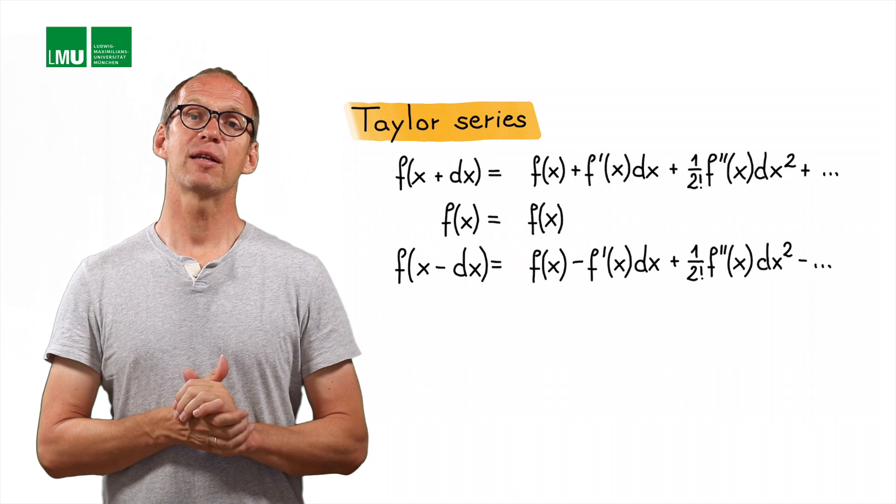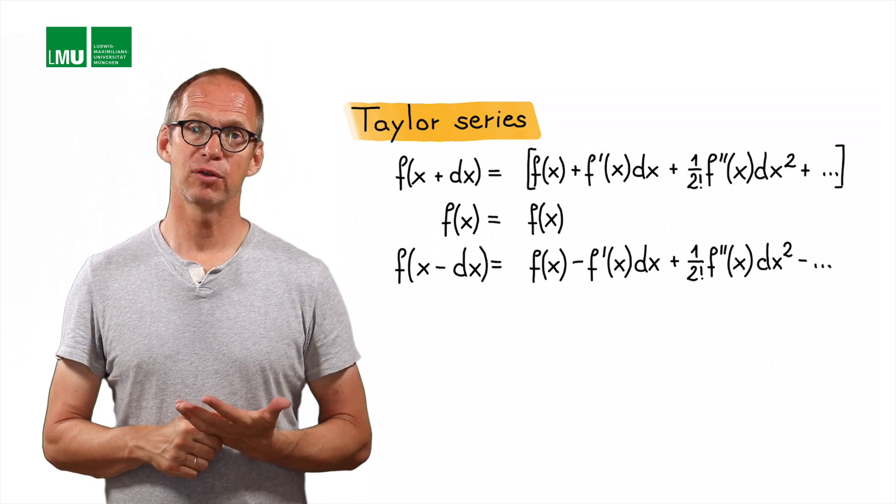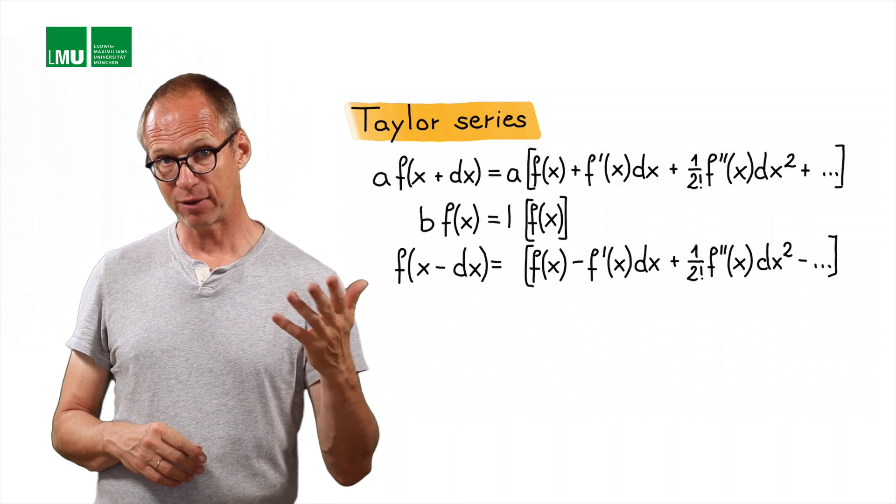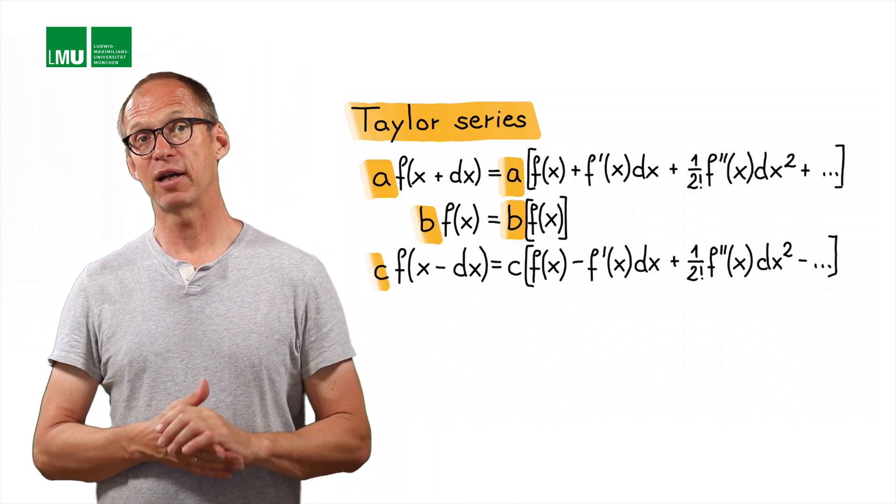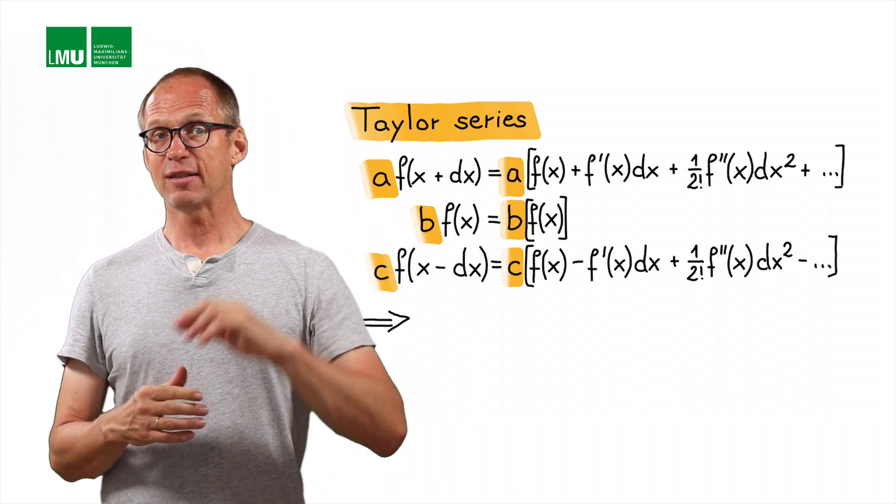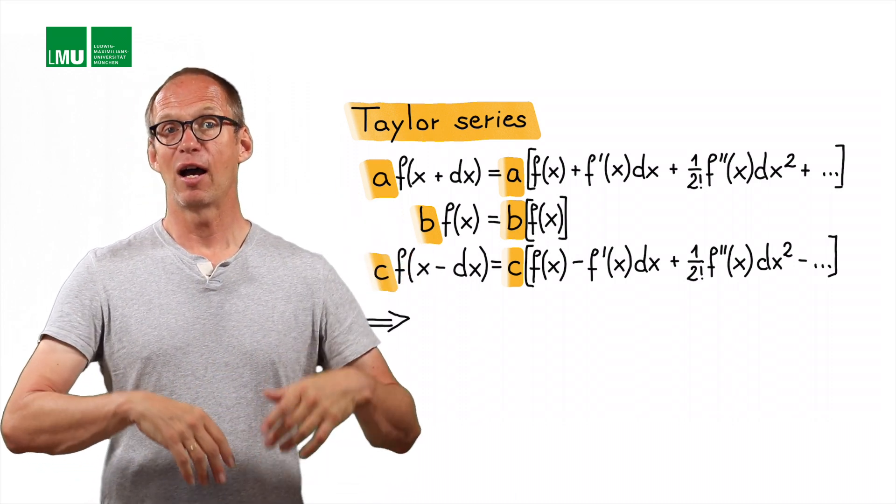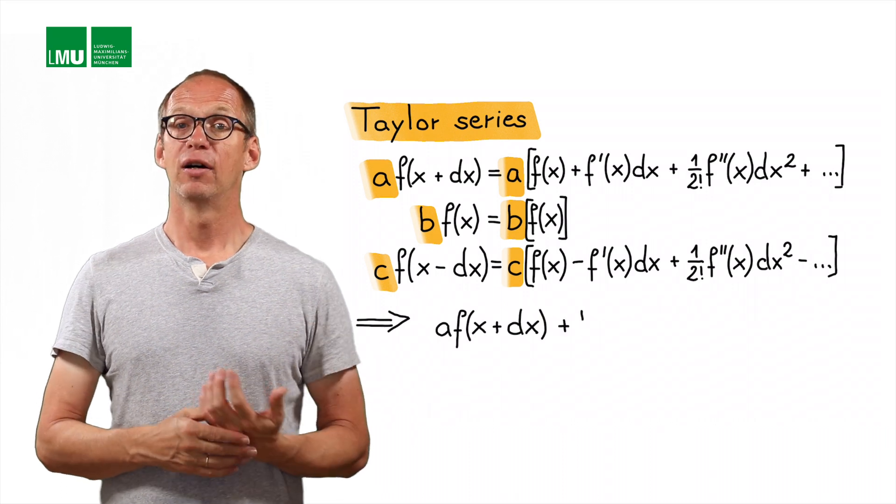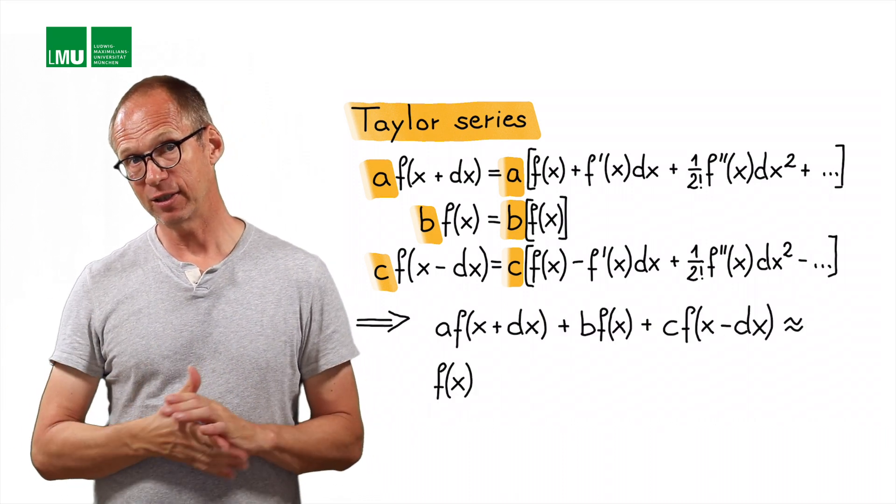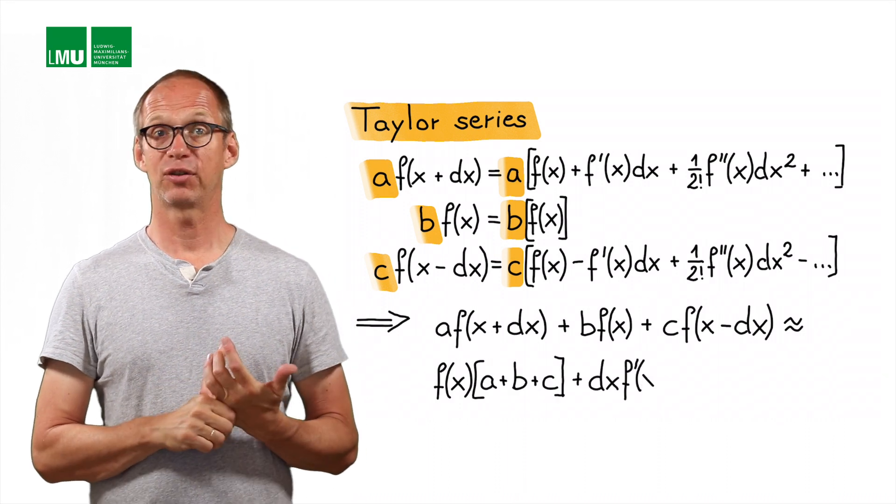So let's simply multiply each of those equations by a, the first one by a, the second one by b, the third one by c and sum them up. So on the left hand side now we have a weighted sum of the functional values and on the right hand side we have the equivalent expression using Taylor series.